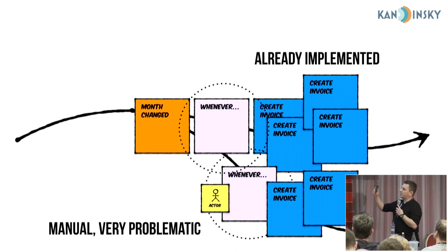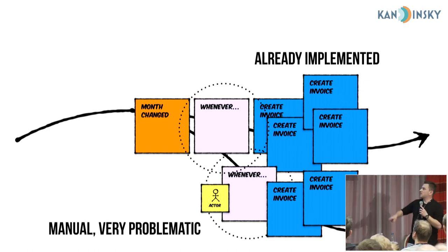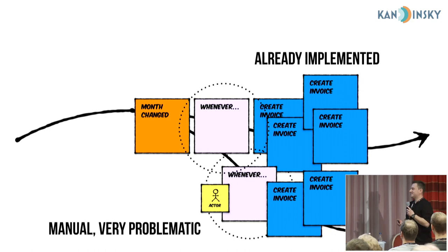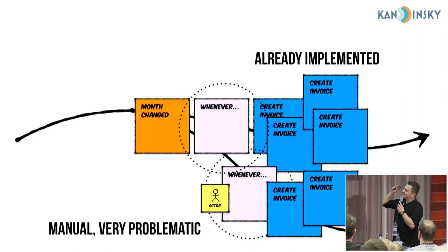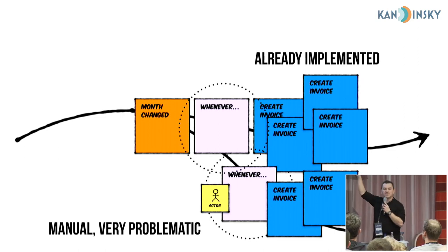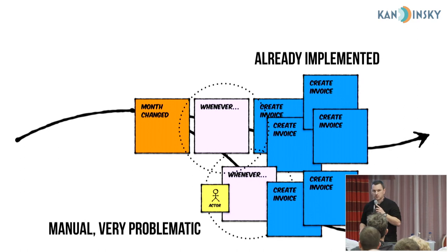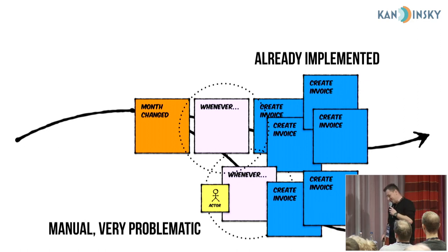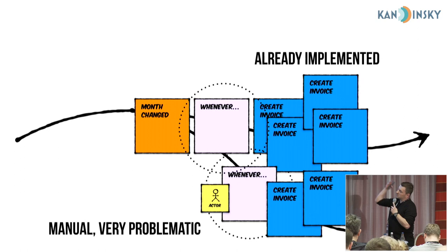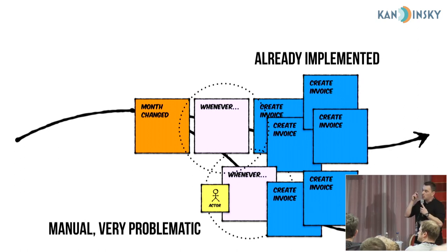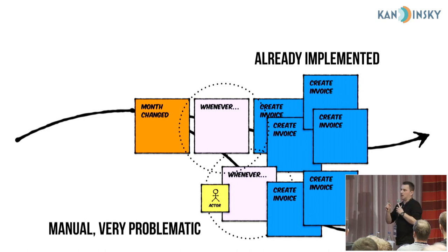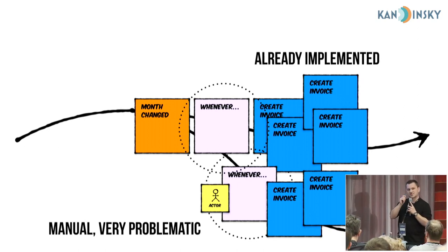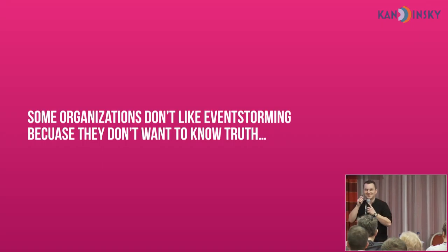When we ran a big picture event storming session, we modeled the invoicing flow: a developer remembered there was a cron job sending a signal to start the invoicing process. But at the same session, one person from the accounting team said, 'Whenever the month changes, I have a separate process — I create some invoices on my own.' Developers didn't even know that some processes had leaked from the application because the application wasn't able to support them. We identified that a single process had two versions: a manual one — where the company has a bus factor of one — and the execution by that single person takes two weeks per month. The company didn't even know about it. This is a perfect example of how looking for policies shows you how the company really works.